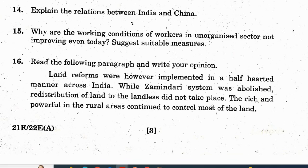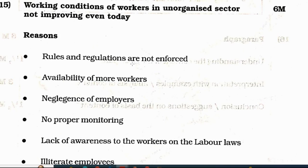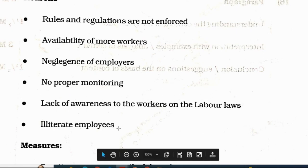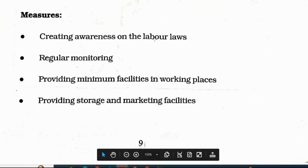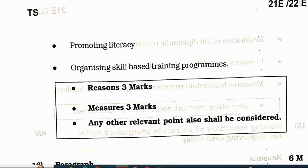Question 15: why are the working conditions of workers in unorganized sectors not improving even today? Suggest suitable measures. Reasons: rules and regulations are not enforced, availability of more workers, negligence of employers, no proper monitoring, lack of awareness of labour laws among workers, and illiterate employees. Measures: creating awareness on labour laws, regular monitoring, providing minimum facilities in working places, providing storage and marketing facilities, promoting literacy, and organizing skill-based training programs. Reasons: 3 marks; measures: 3 marks. Total 6 marks.